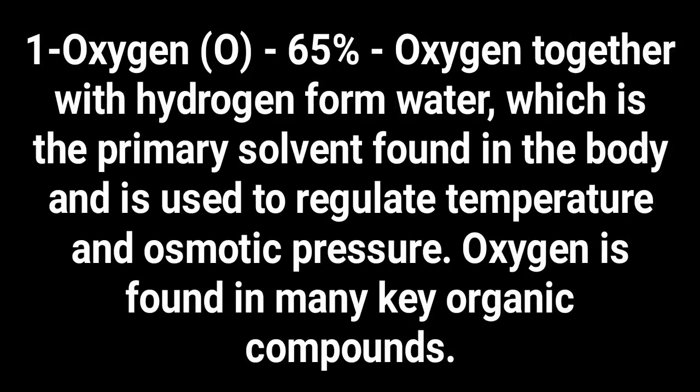Number one: oxygen — 65 percent of the human body. Oxygen together with hydrogen forms water, which is the primary solvent found in the body and is used to regulate temperature and osmotic pressure. Oxygen is also found in many key organic compounds.